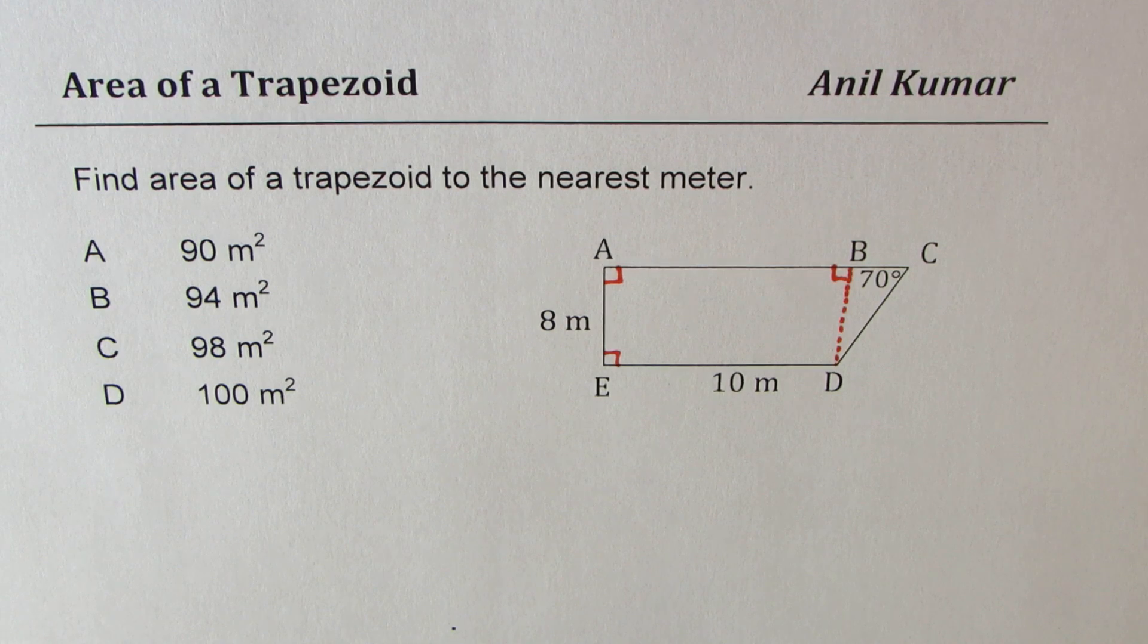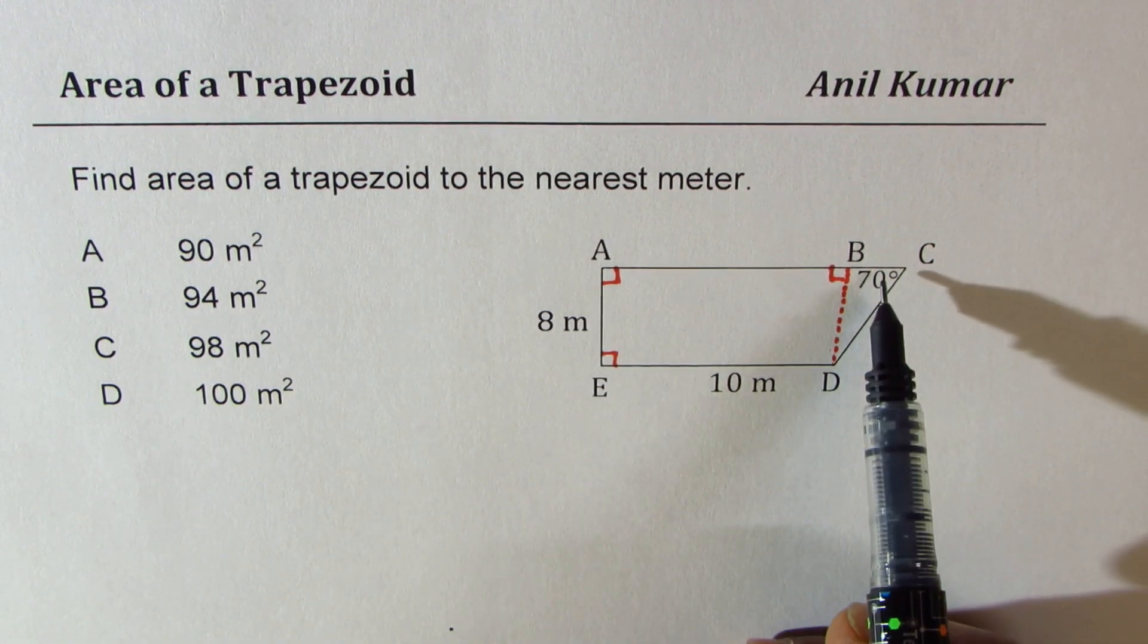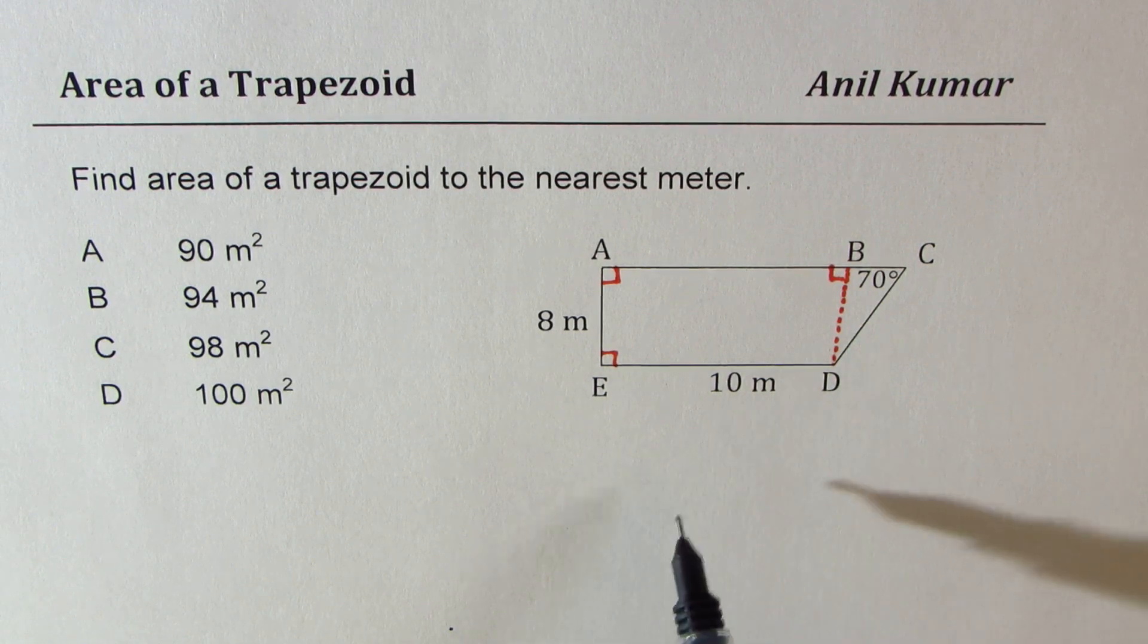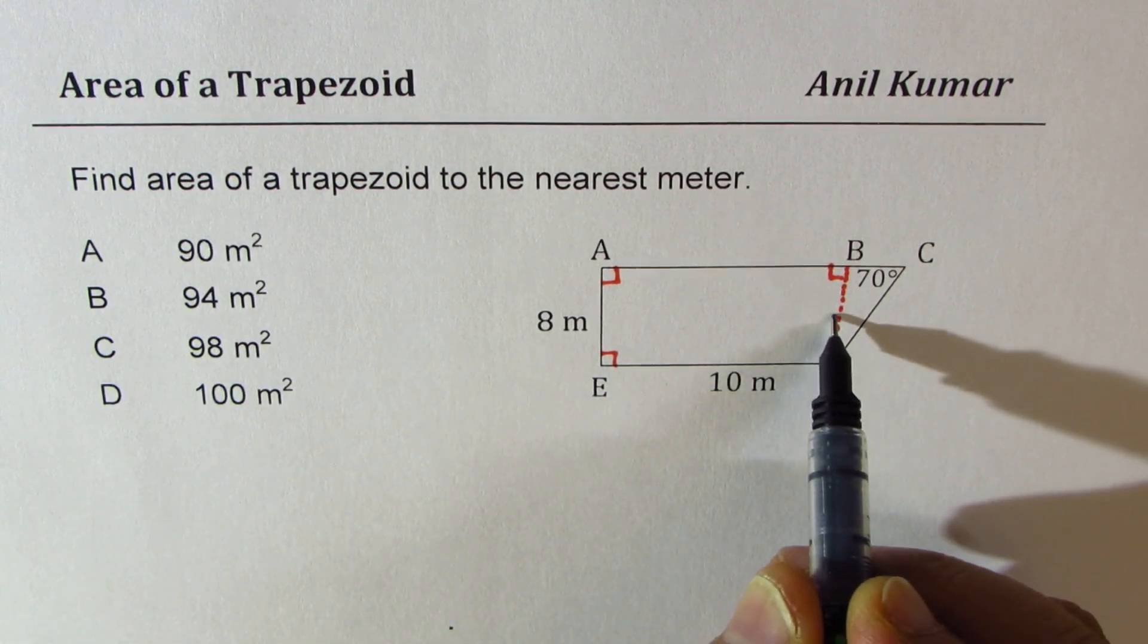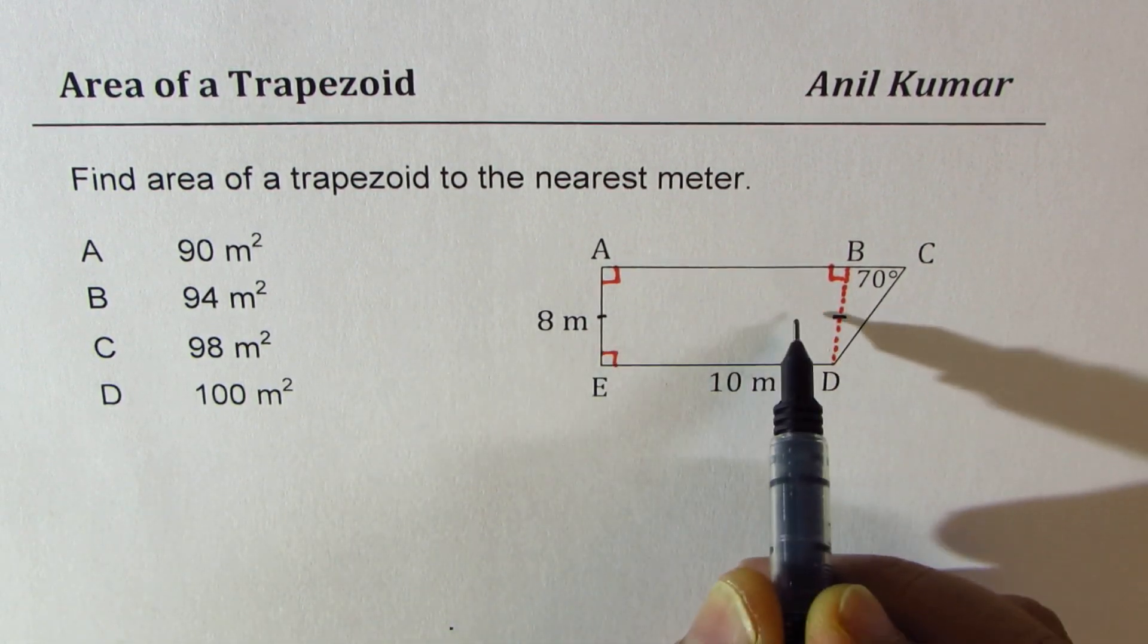Now we need to find the height of this triangle and also the base of the triangle. Basically, base of the triangle to get the area. Height we know is same as 8 meters.